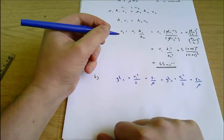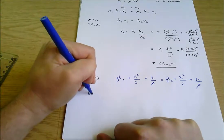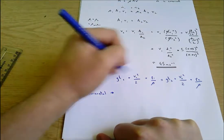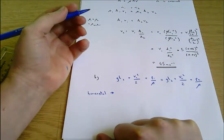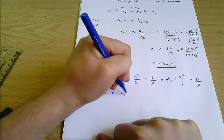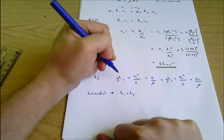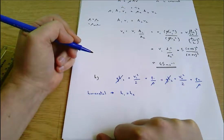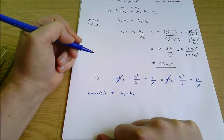First of all, we're told the hose is horizontal and that means H1 equals H2. There's no height difference between the two ends of the hose. So those two terms cancel out. This equals that and so we can subtract it from both sides and it disappears.